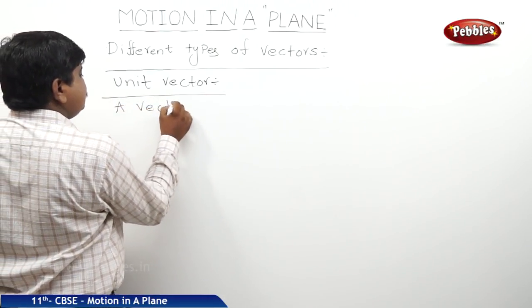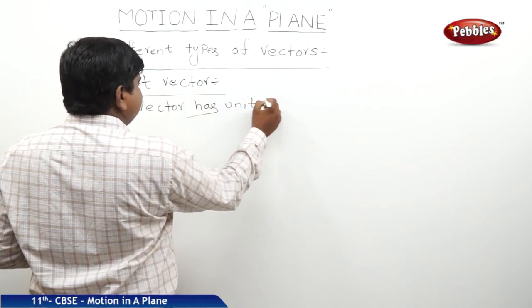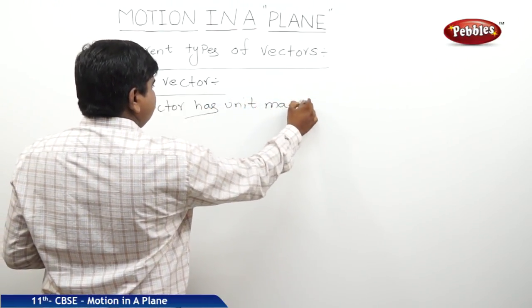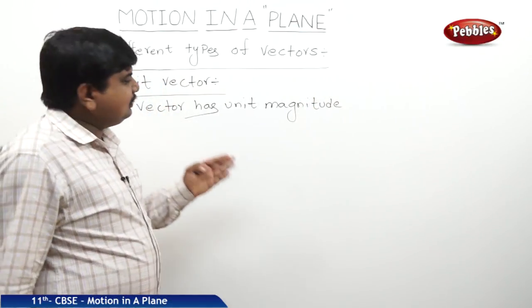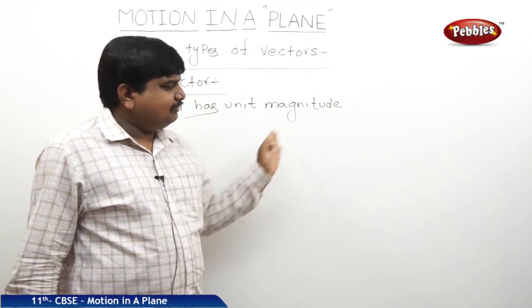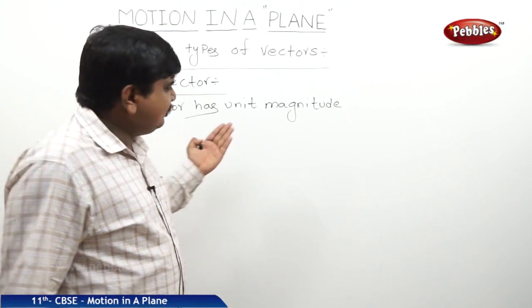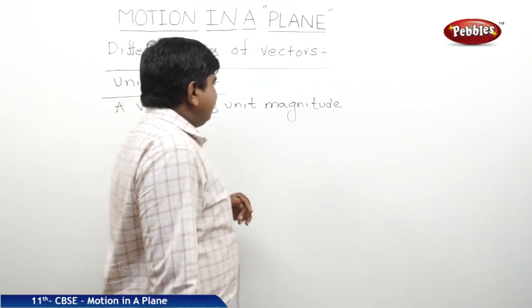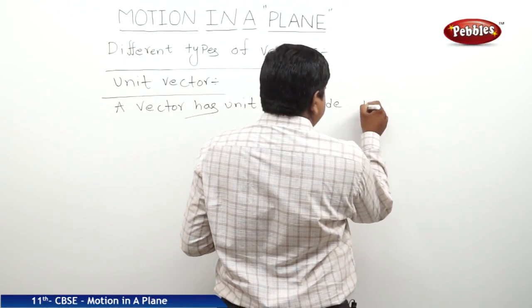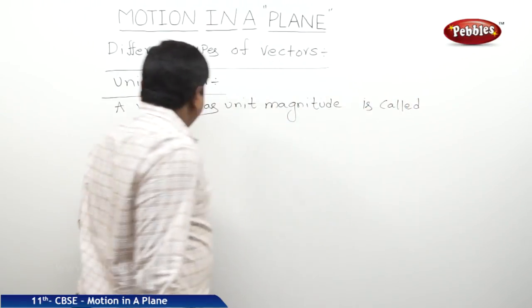A vector has unit magnitude, wherever the possible direction is there, means in the forward direction or backward direction. So no need of removing the direction independent or dependent here. Vector has unit magnitude is called a unit vector.